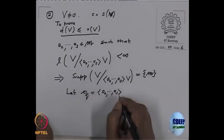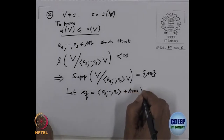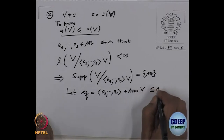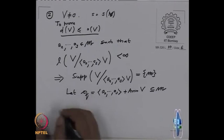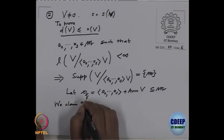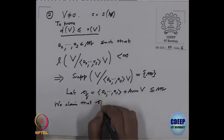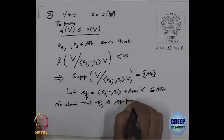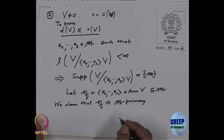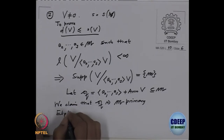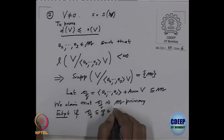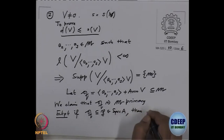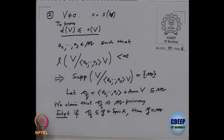Therefore, because the length is finite, the support of V by A1 to AS times V consists of only the singleton M. Because if the module has finite length, the support consists only of the maximal ideal. Let us put this ideal to be Q — the ideal generated by A1 to AS — and actually let Q equal this ideal plus the annihilator of V. This is contained in M. And now we claim that Q is M-primary.